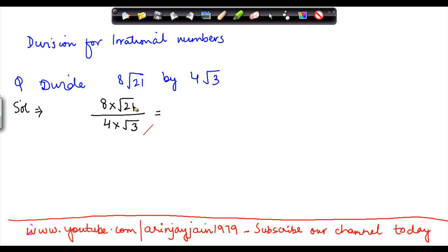Now we know that under root 21 can also be written as under root 7 into under root 3. Why? Because square root of 21 is equal to square root of 7 into square root of 3.